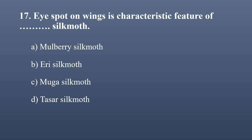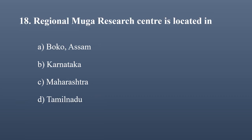Eye spot on wings is a characteristic feature of which silk moth? Options: mulberry, Eri, Muga, Tassar. Mulberry silk moth is small and filmy white in color. Eri and Muga silk moths are similar to Tassar, but the large eye spot on wings is present only on Tassar silk moth. The correct option is Tassar silk moth.